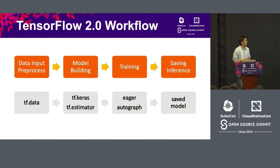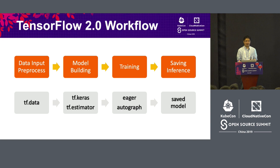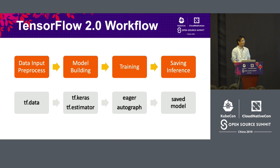In TensorFlow 2.0, the biggest change is obviously eager execution. Back in TensorFlow 1.x, static graph execution was used, meaning instead of running a program imperatively, you had to construct your graph and wait for it to be deployed before getting a result. This is good for production deployment, but it has a disadvantage for debugging because you don't get results immediately. In TensorFlow 2.0, eager execution is enabled by default and you can run TensorFlow just like a Python program, very natively.